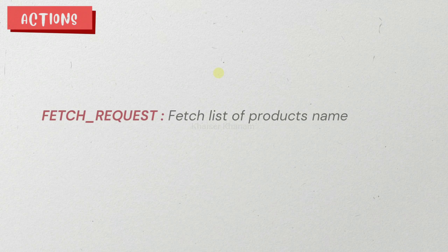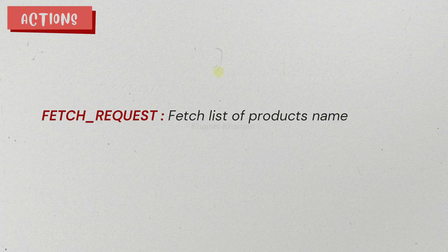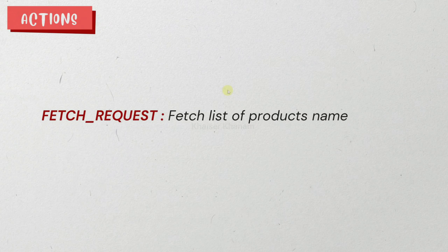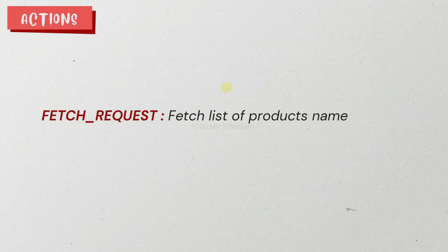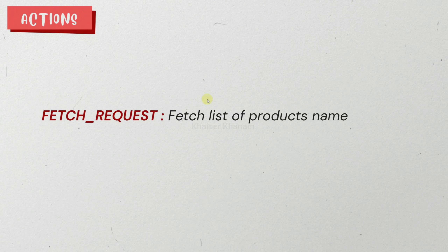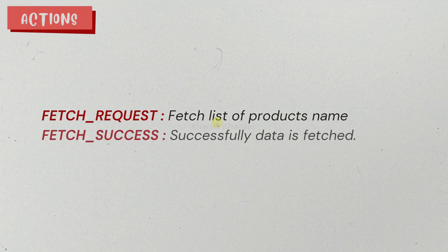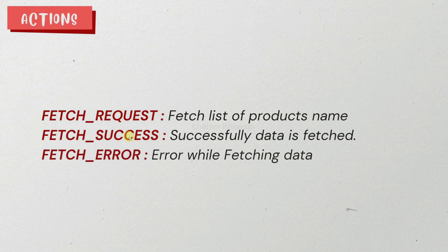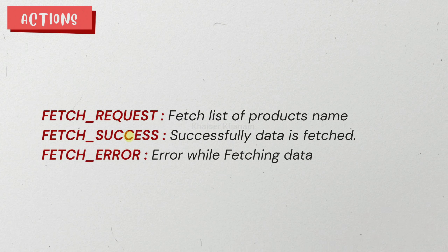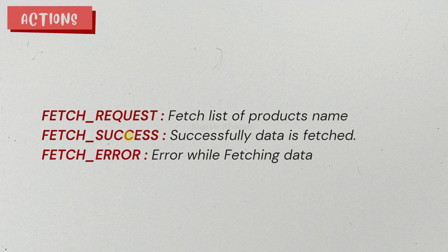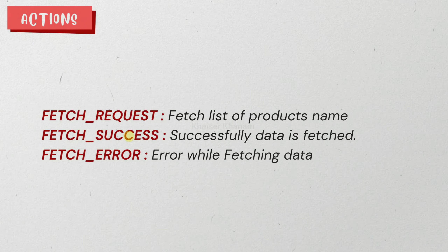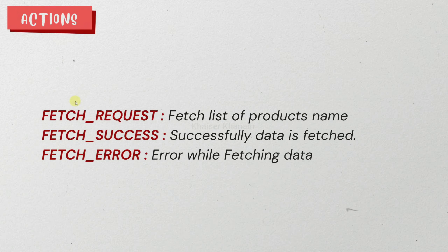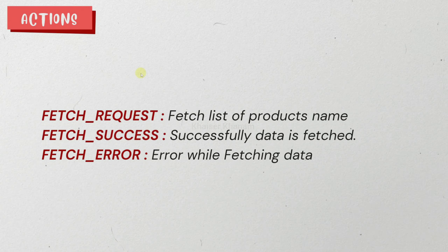Then we have actions. Inside this we can define three action types. The first action type is fetch_request to fetch products from an API endpoint. The second and third action types depend on the outcome of the first: if data is fetched successfully, we use fetch_success; if there is any error, we use fetch_error and display an error message to the user.